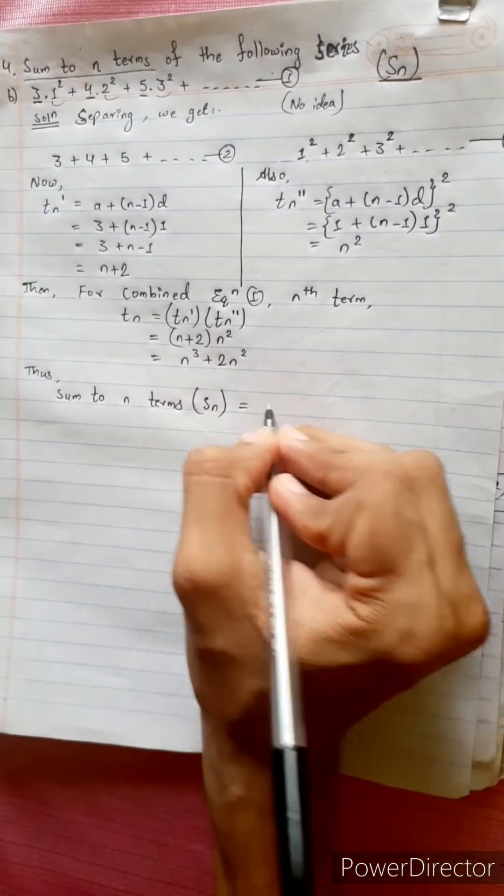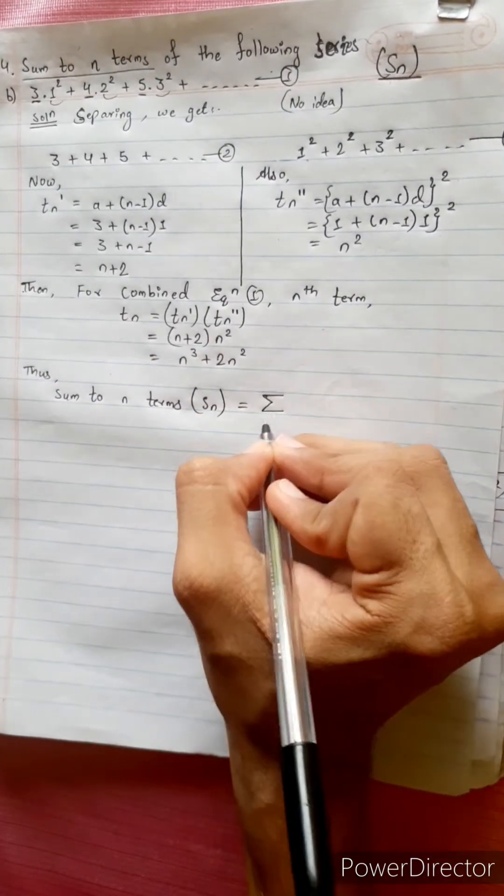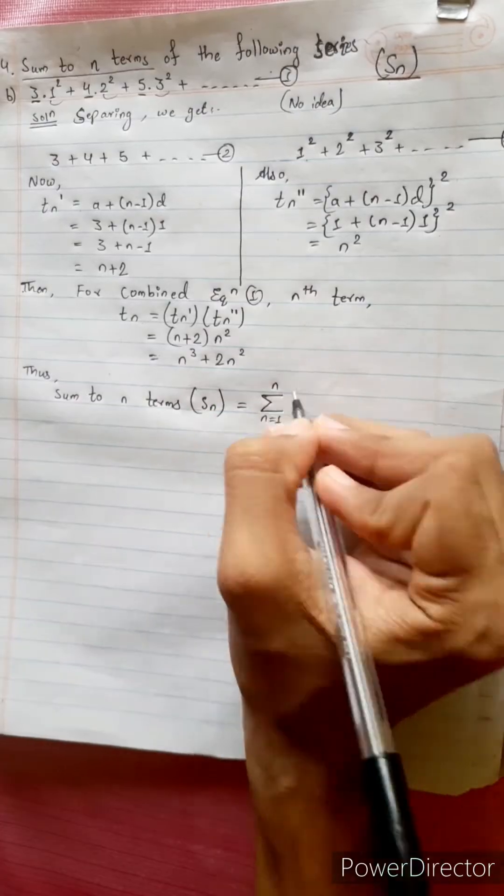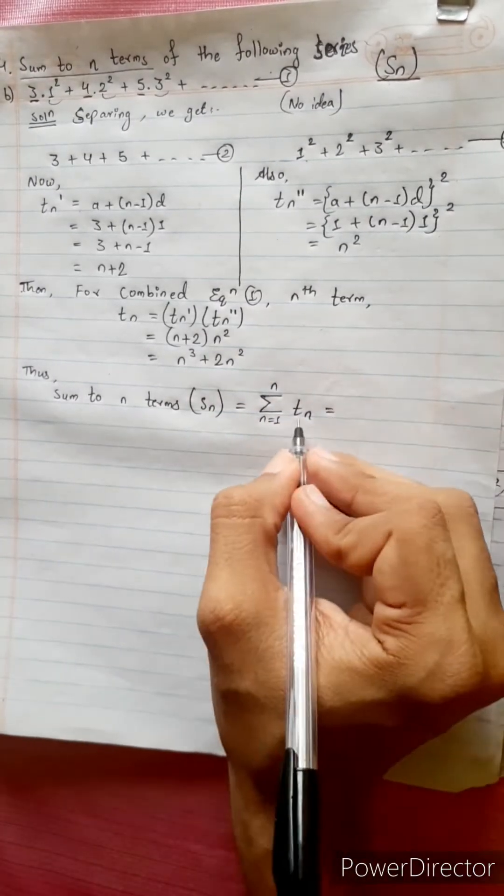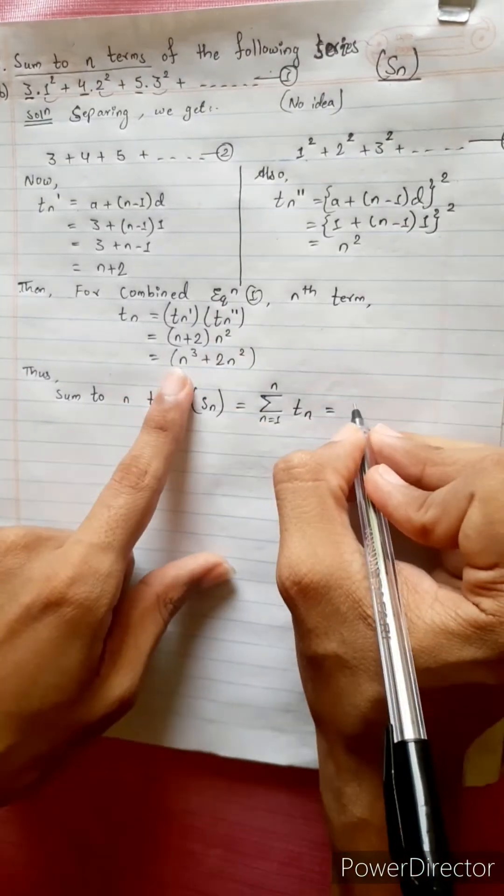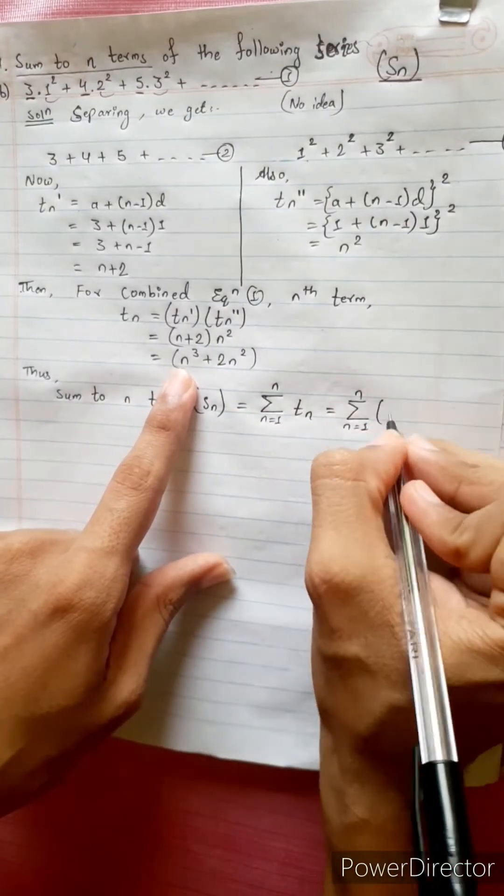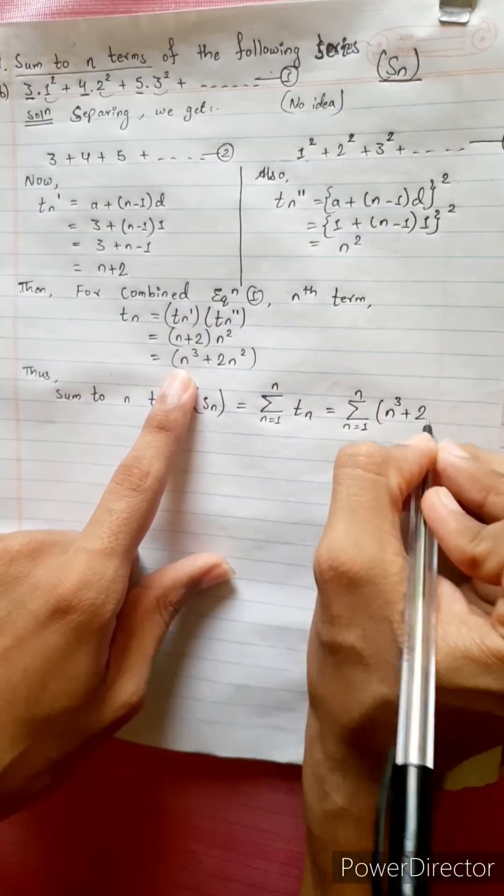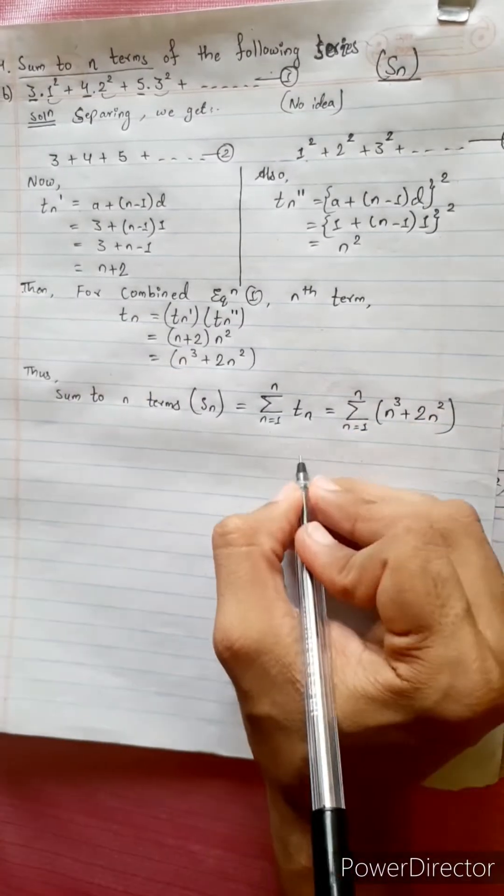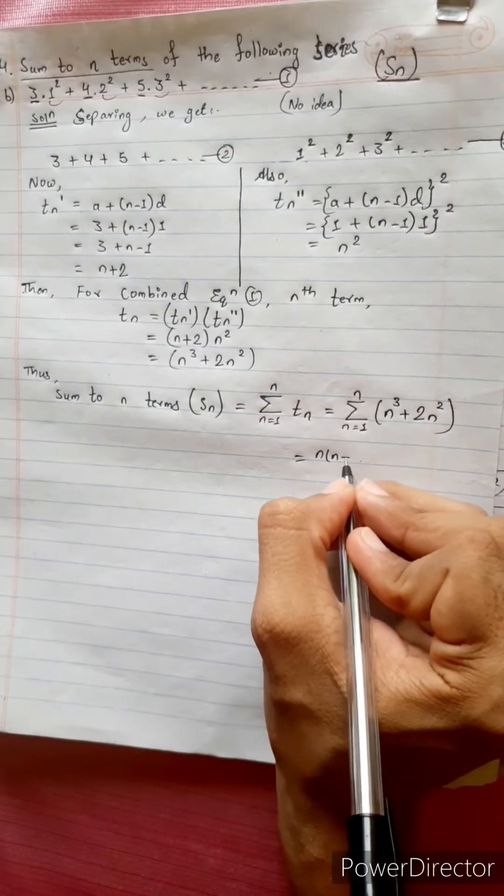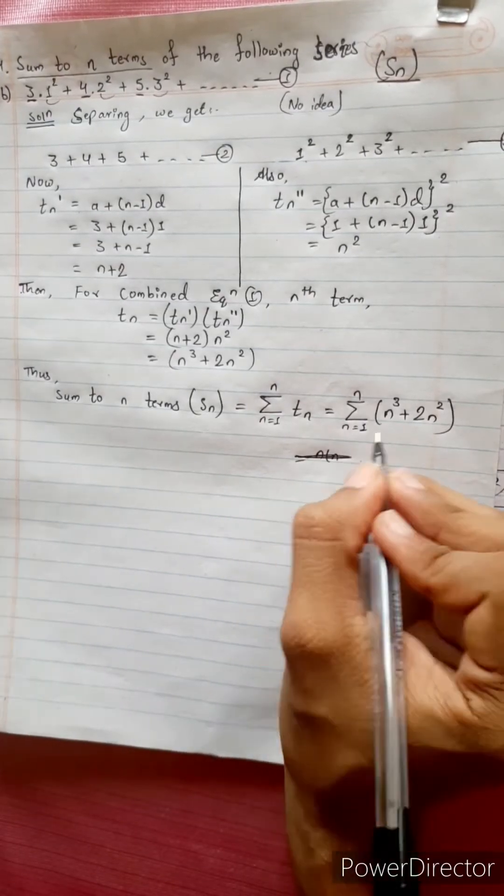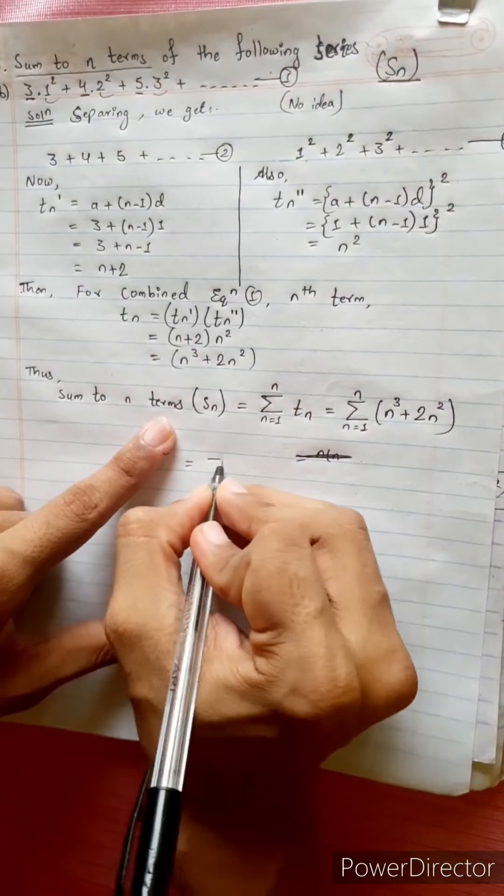Sn is given by formula. n cube plus 2n square. Cube has a formula but wait, direct formula not applied. I'll break it. Summation n cube.